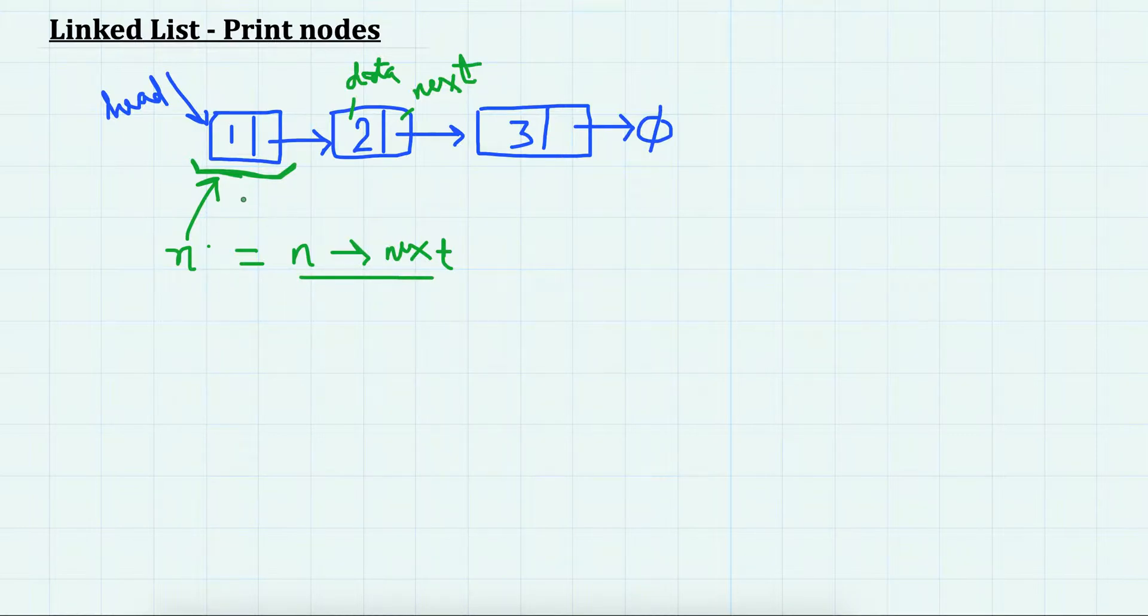So this will now point to two. Again it's not null, so it will move here. Again not null, and while iterating we will also be printing the elements.